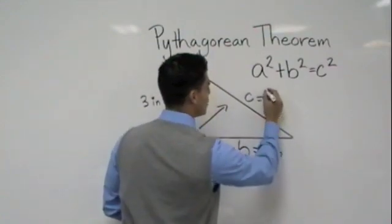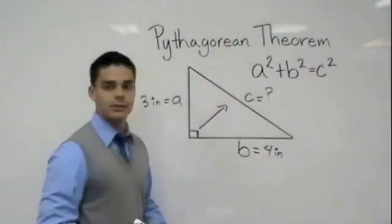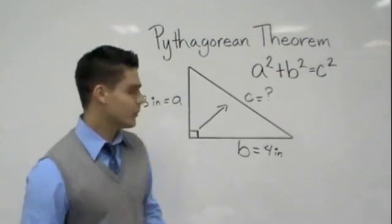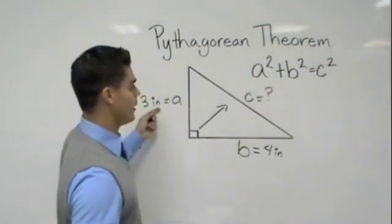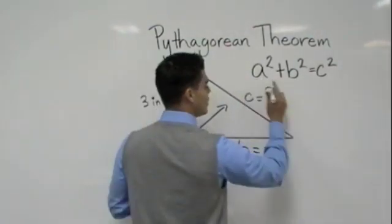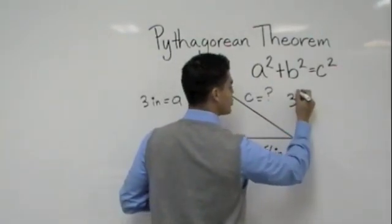And we do not know what our C is. So let's go ahead and solve for C. Use your formula and substitute values in. So let's start with our A. We know that A is three, so therefore we're going to square three.